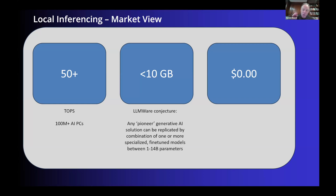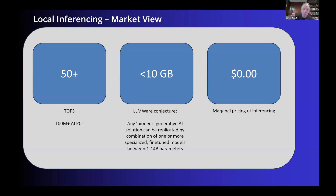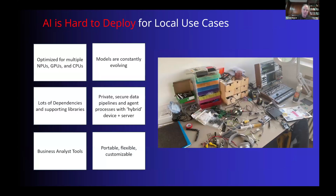So you get the benefit of the acceleration of running and loading all these models entirely on the edge, and you can really capitalize on the performance delivered by that 50-plus TOPS. The real punchline and headline from all of this is we think that the marginal pricing of inferencing is going to zero. Tokens will be free. We believe ultimately that is the cost economics this is going to drive and ultimately what makes this such a compelling value proposition.